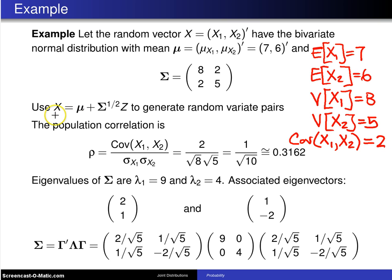So starting with that bivariate normal distribution, we want to see if we can use that result at the bottom of the previous page to generate random variate pairs from this bivariate normal distribution.